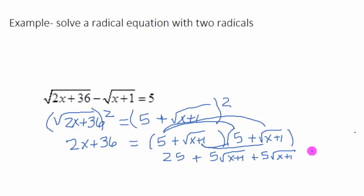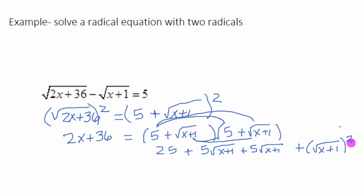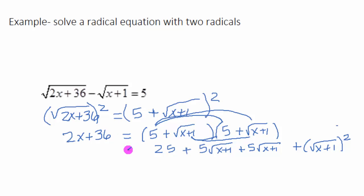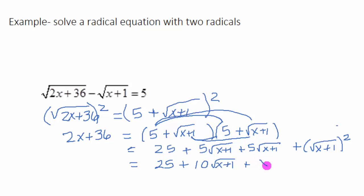Then you're going to multiply the last terms, which is a case where we're taking a square root expression and squaring it, so these undo each other. On the right-hand side, we have 25 plus 5 square root of x plus 1 plus another 5 square root of x plus 1, which is 10 square root of x plus 1. Squaring the square root gives you just x plus 1 back. We have some like terms: 25 and 1 is 26, so now we have 26 plus 10 square root of x plus 1 plus x.